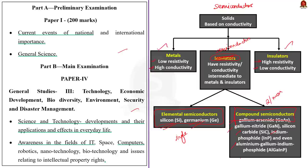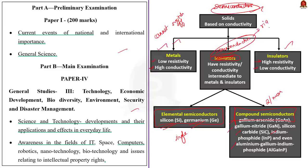You might wonder why semiconductors are used in modern electrical appliances and not metals, since metals have higher conductivity. Metals have high conductivity, which means they conduct electrons very rapidly, so it would be hard to switch them off. Similarly, insulators do not conduct electrons at all, so turning them on would be equally difficult. On the other hand, semiconductor materials have properties that are just right in the middle, and this is why they are preferred.